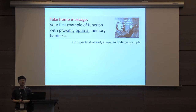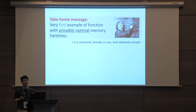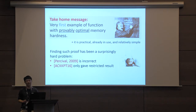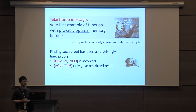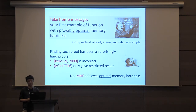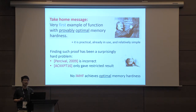The most important take-home message is that scrypt is the very first example of a function with provably optimal memory hardness — and notably it is practical, already in use, and relatively simple. Finding such a proof has been a surprisingly hard problem, and previous proofs were either incorrect or restricted. Regarding optimality, no IMHF can possibly achieve optimal memory hardness, and the proof techniques for IMHFs are not sufficient here.